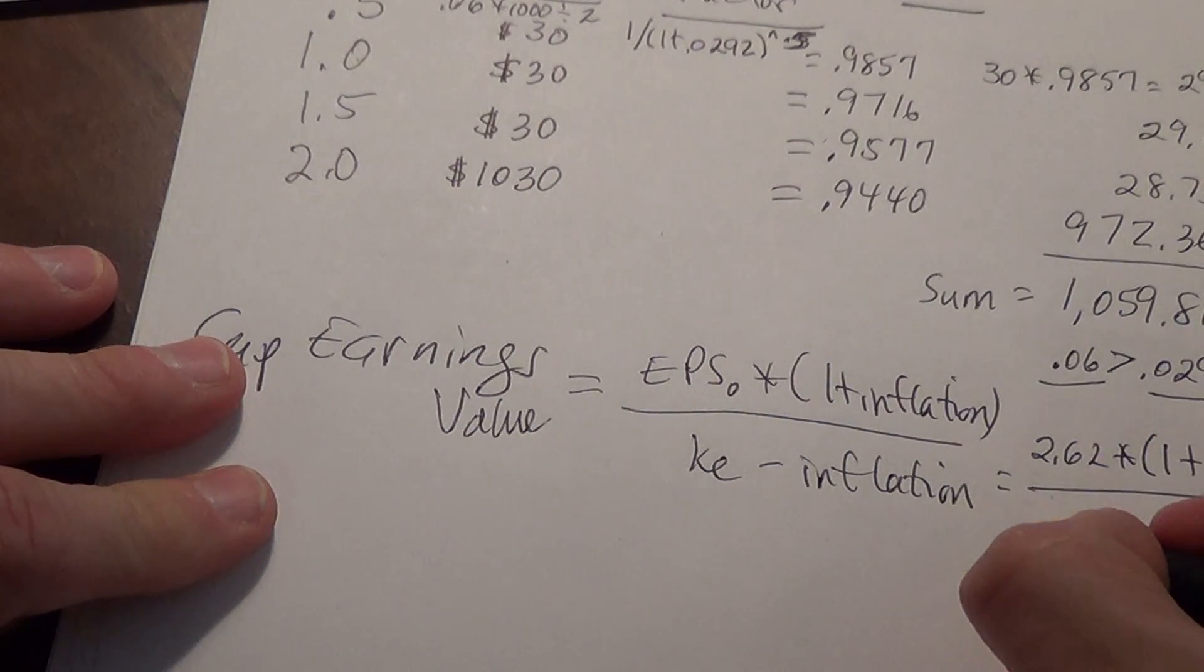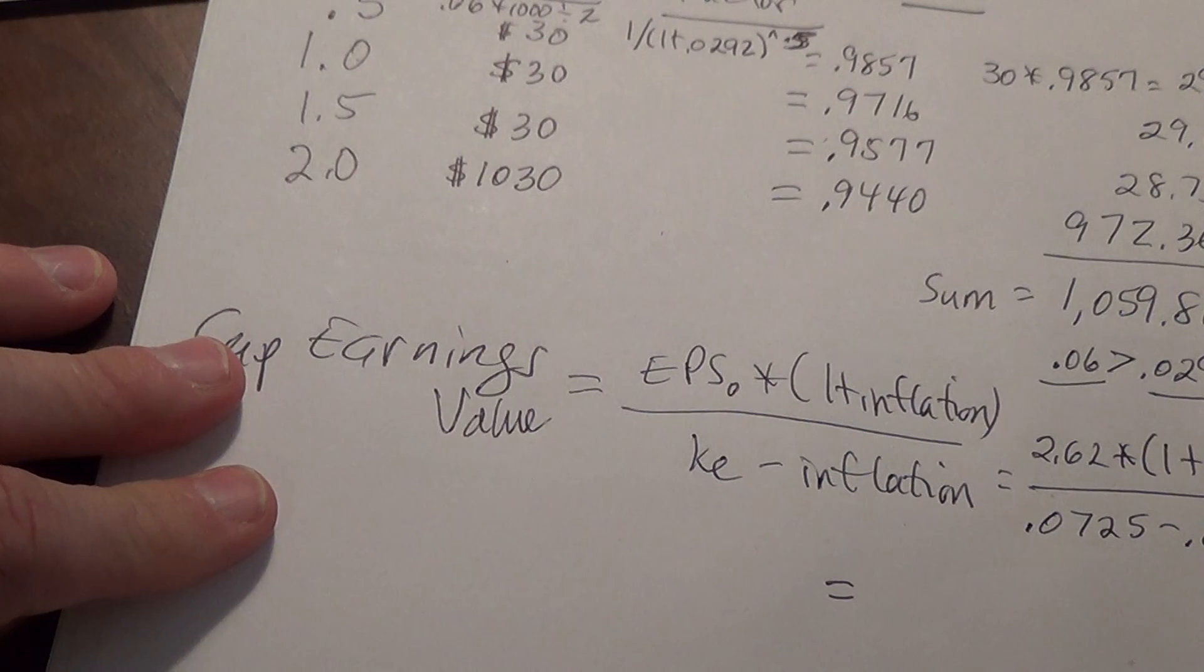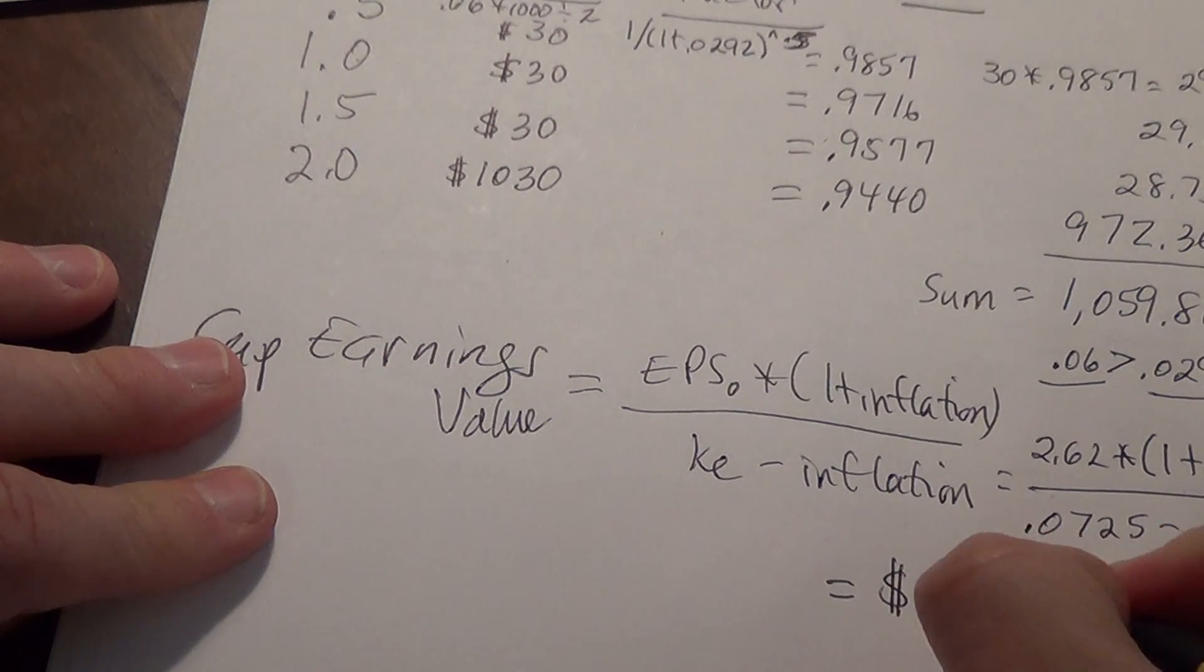We divide that by our discount rate 0.0725 minus that same 0.025. And when we do that, we should get a valuation of $56.54.